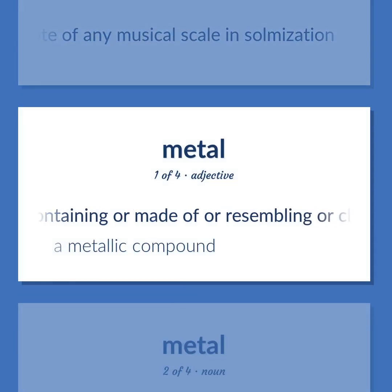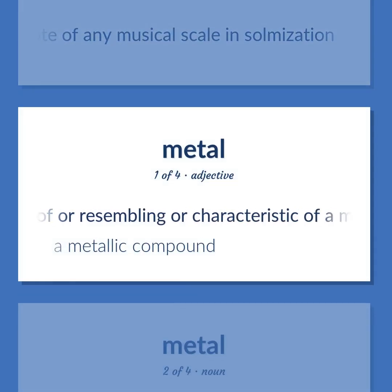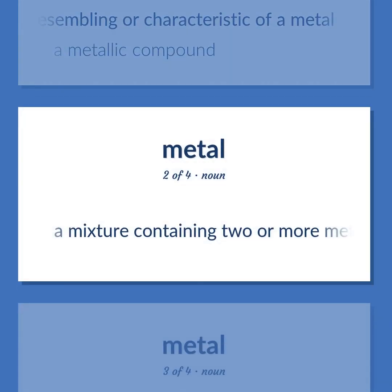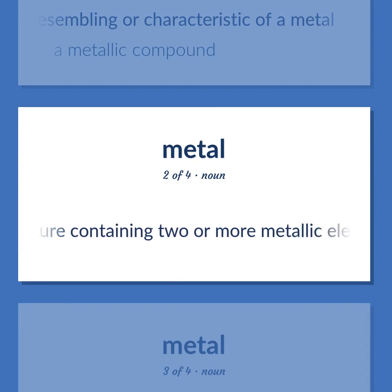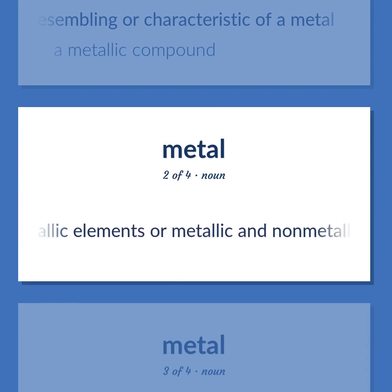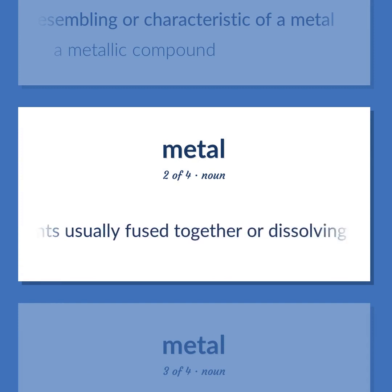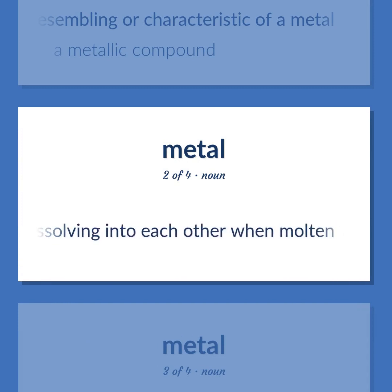Containing or made of or resembling or characteristic of a metal. A metallic compound. A mixture containing two or more metallic elements, or metallic and non-metallic elements, usually fused together or dissolving into each other when molten.